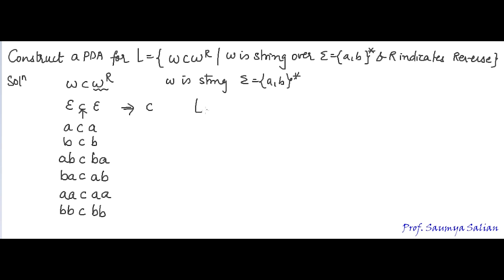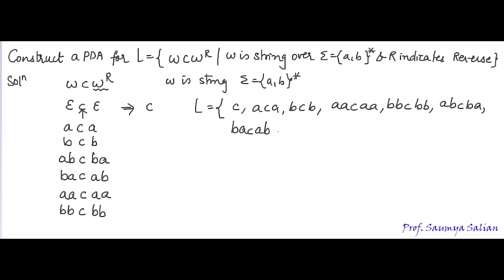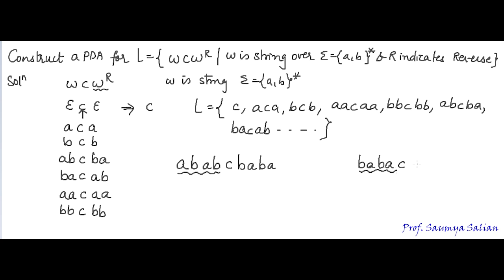In this language, valid strings include: C, ACA, BCB, ABCBA, BACAB, AACAA, BBCBB. For example, if W is AB, after separator C the reverse would be BA. Or if W is BABA, the reverse would be ABAB.